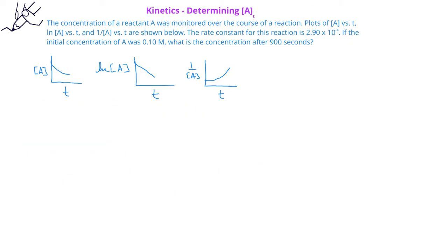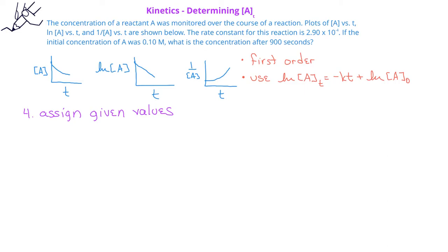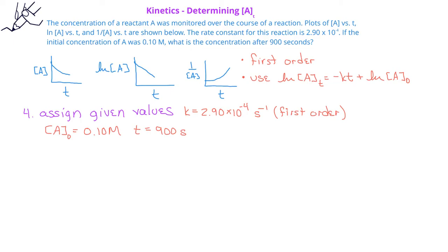Now that we know this reaction is first order and we know which integrated rate law to use, we can assign the given values to their variables. We know that the rate constant is 2.90 times 10 to the negative fourth, and now that we know it's first order, we can assign units to the rate constant of seconds to the minus one. We know the initial concentration of A is 0.10 molar, and we know that the time t is 900 seconds.